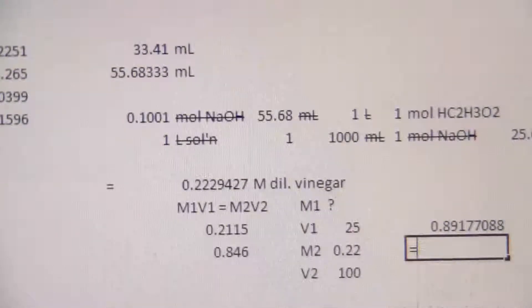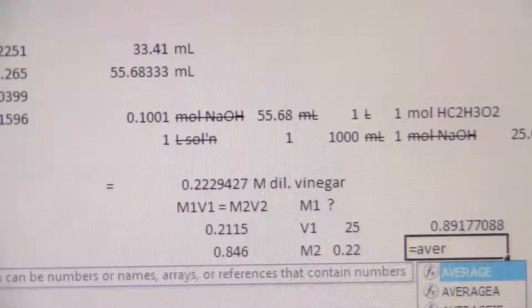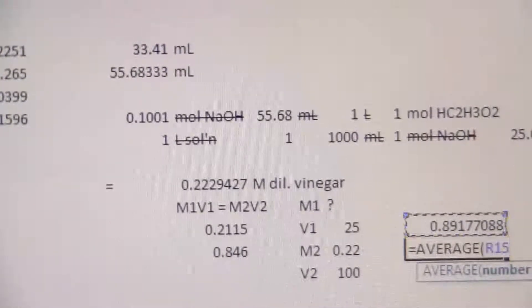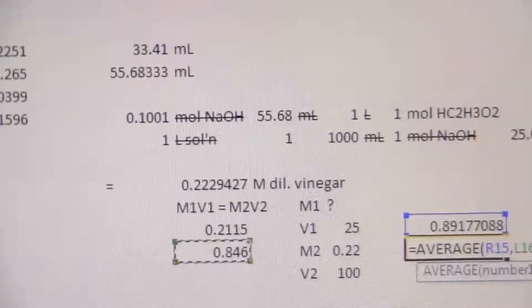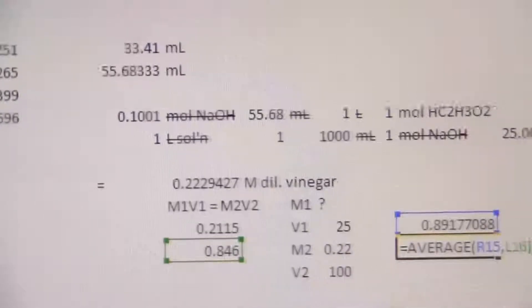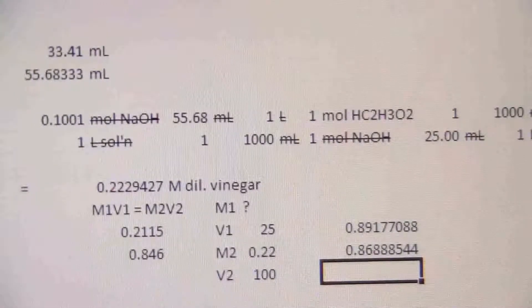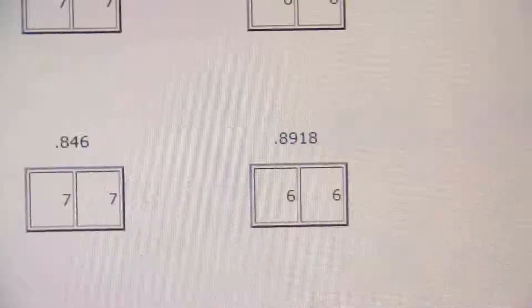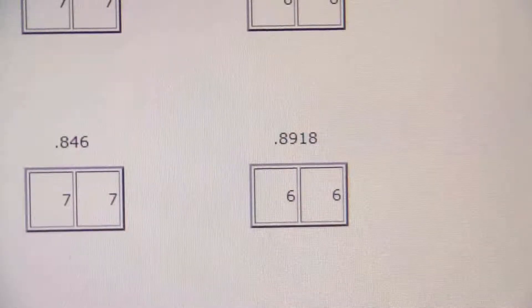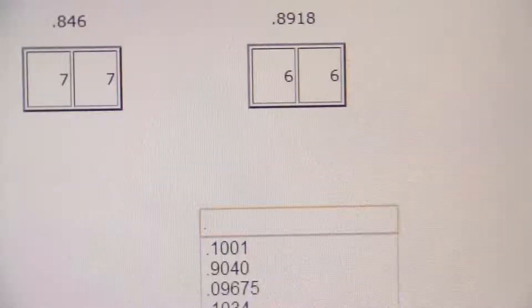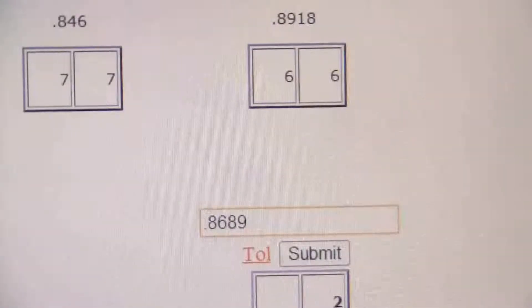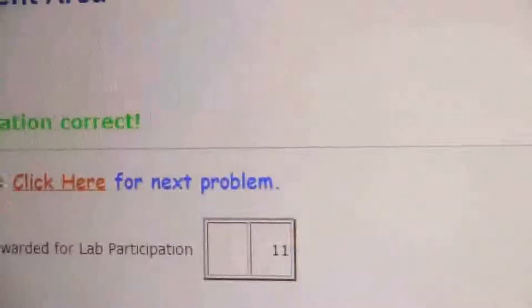And so if we just average those out, I can do this like this, average this one and that one, and I get 0.8689. Put that here, 0.8689, and there we go.